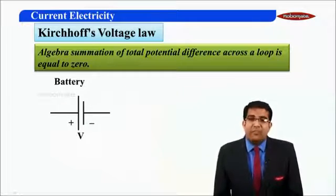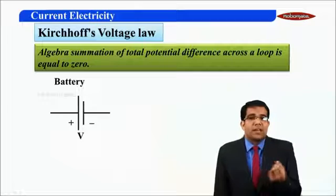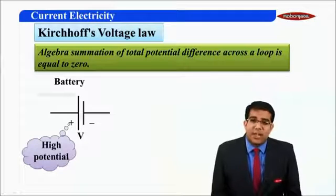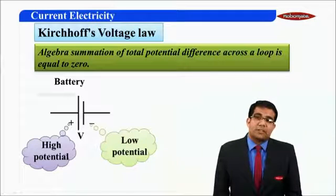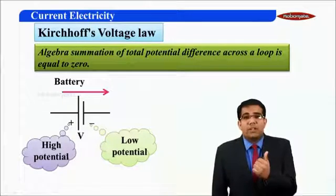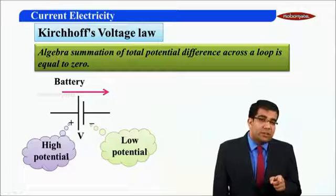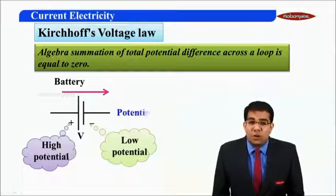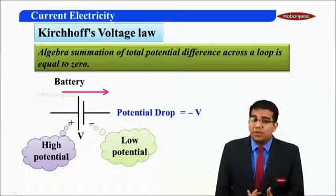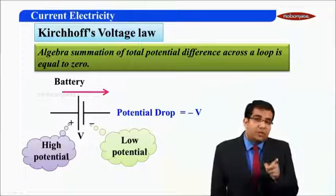I have a battery of potential difference V. A battery has a high potential represented by its positive terminal and a low potential represented by its negative terminal. If I move from the positive terminal towards the negative terminal, I will have a loss, and that loss is minus V. V is the magnitude of the potential drop and the minus sign is due to moving from high potential towards low potential.